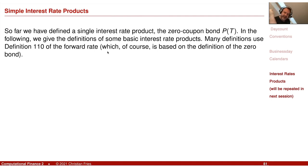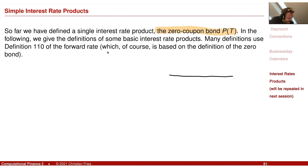We have started by defining a single interest rate product: the zero coupon bond. This is the financial product that pays one unit of currency at time capital T, and I observe the value of this at some earlier time, maybe little t.